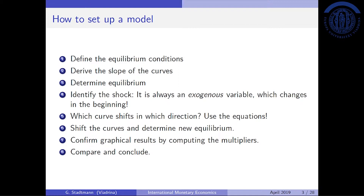Then it becomes important: we identify a macroeconomic shock, and it is always an exogenous variable which changes. We have to find out which curve shifts in which direction, and we use the equations to find an answer. Afterwards we come up with the graphical analysis, shift the curves and determine the new equilibrium. We confirm the graphical results by computing the multipliers, compare the graphical analysis to the multipliers, and conclude.